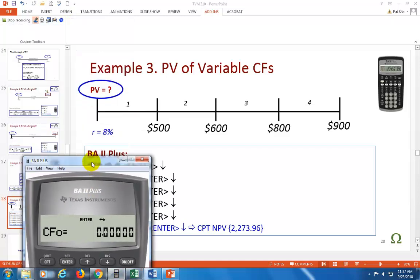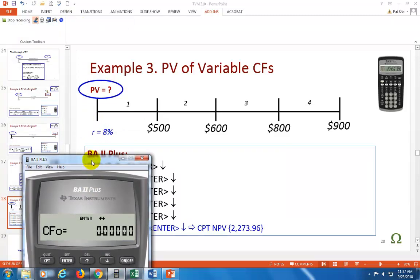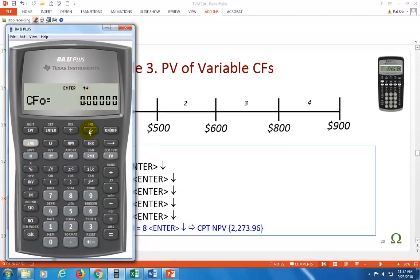So now, if you observe, we do not have any cash flow at time zero. So just ignore this and hit arrow down. C1 refers to cash flow at the end of the first period. So that's 500. Enter. Scroll to C2. C2 is 600. Enter. C3 is 800. Enter. And finally, C4 is 900. Enter. And you're done.